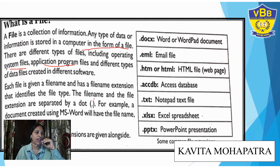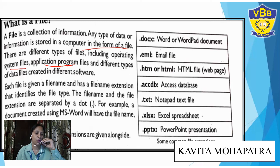Each file has a file name and extension — just like you have your name and surname. The file name and extension are separated by a dot. For example, a document created in MS Word has the file name extension .docx. Some common file name extensions: .docx for Word or WordPad document, .eml for email file, .htm or .html for HTML file, .accdb for Access database, .txt for Notepad text file, .xlsx for Excel spreadsheet, .pptx for PowerPoint presentation.